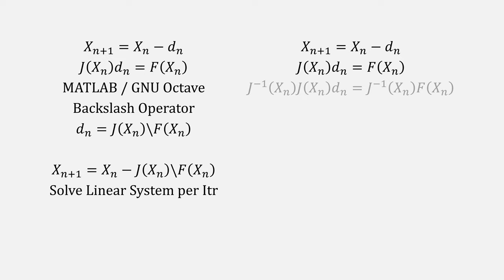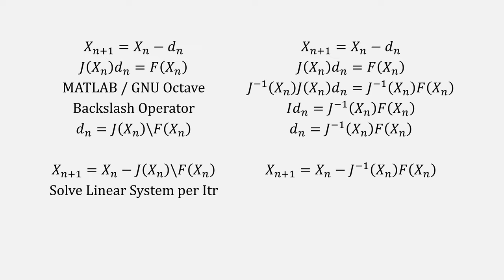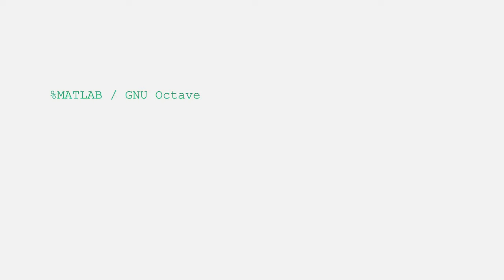We could instead multiply both sides of our d equation with the inverse Jacobian, resulting in the identity simplified to this. Now we can use substitution to come up with this form for Newton's method. This does require now to compute an inverse each iteration, or does it?